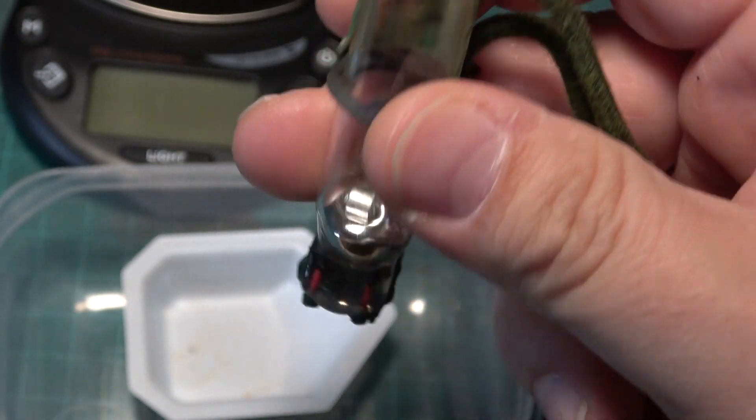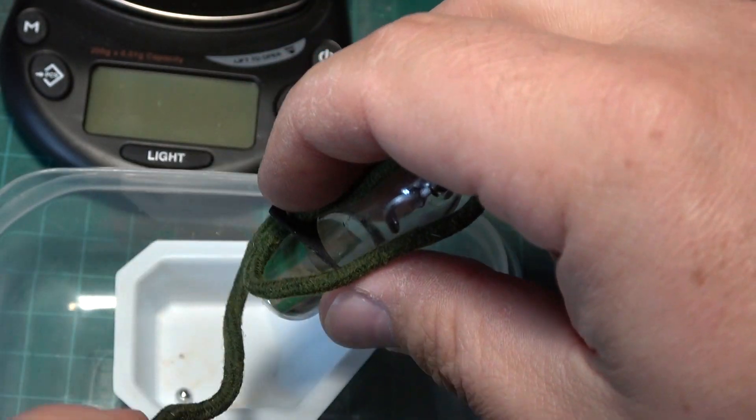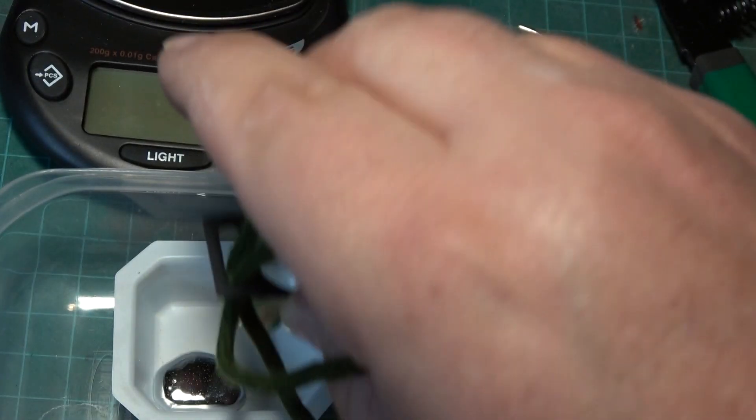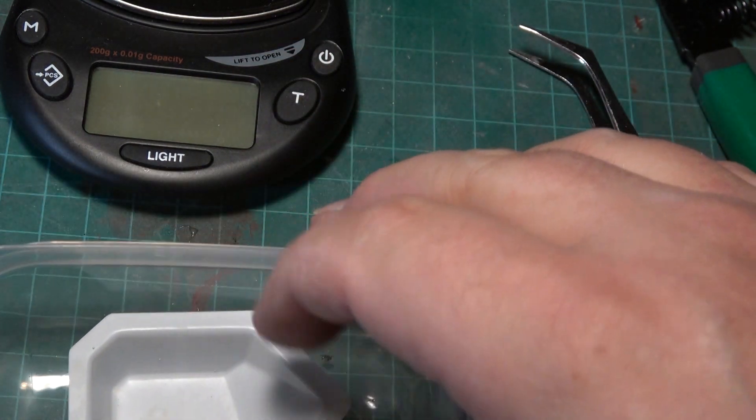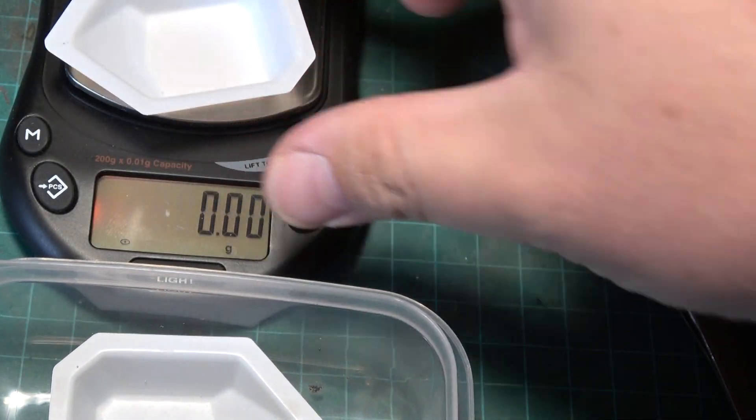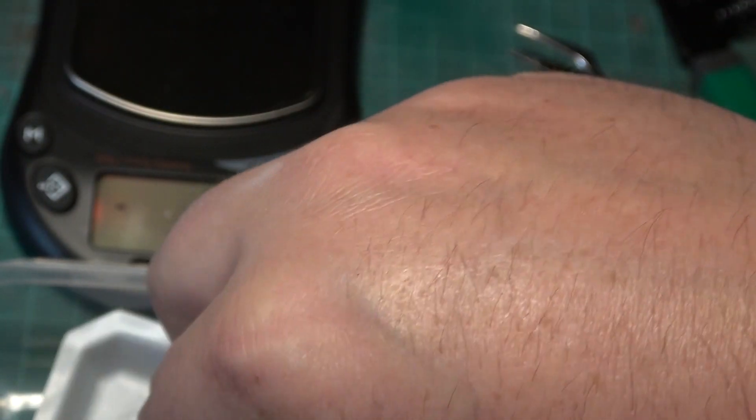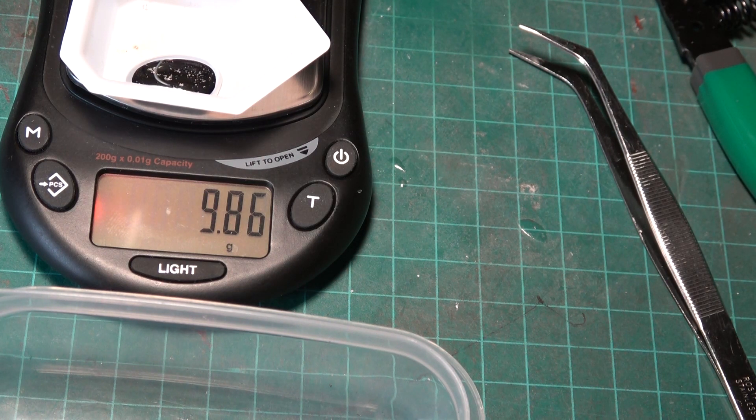I'm curious to see how much is in one of these big boys here. Looks to be it. Considerably more than the small thermostat. 0.71, tare it out. Be a little bit careful. I don't want this in my rug. 9.86 grams. So that's how much is in there. Kind of interesting stuff. Time to put it all in the vial.